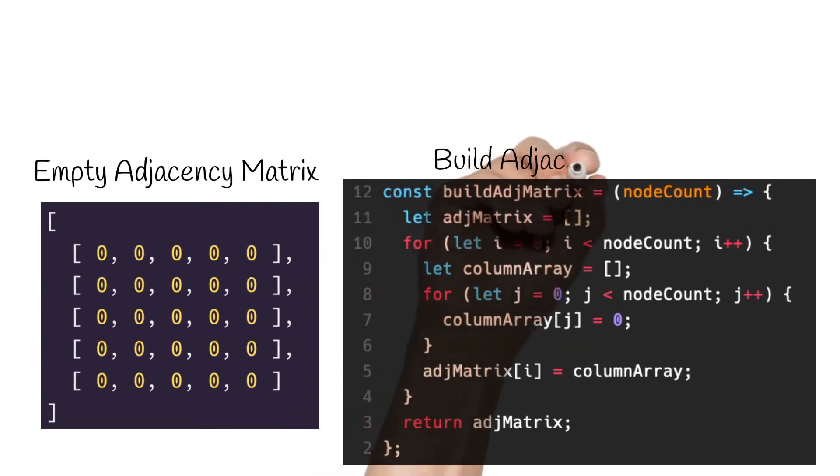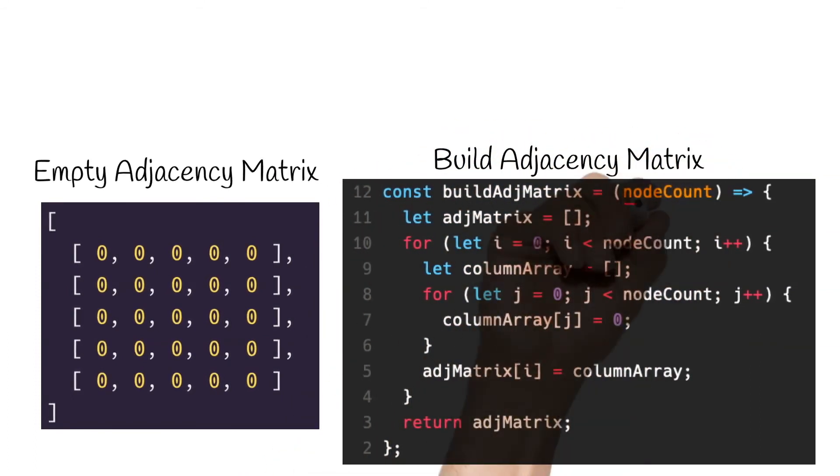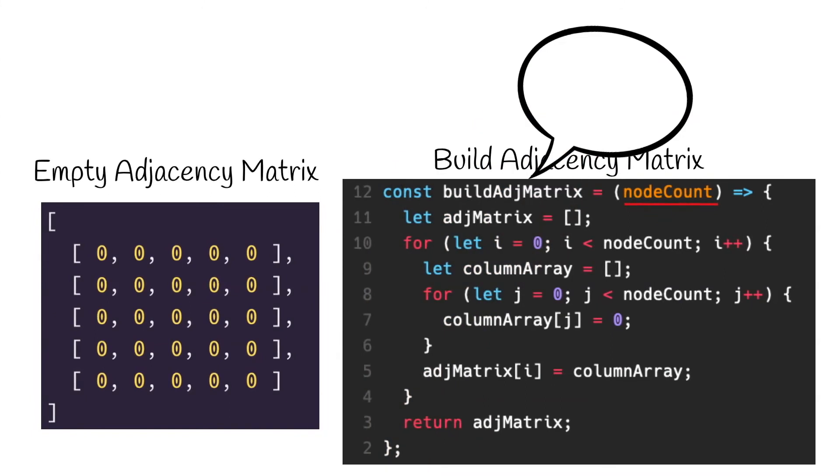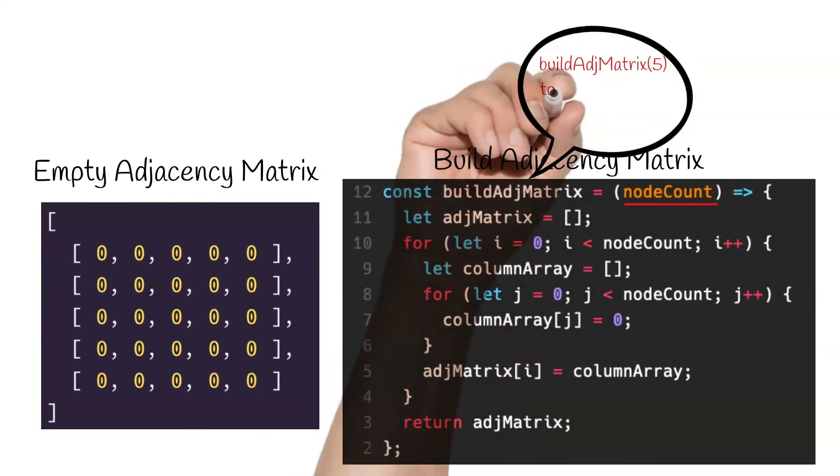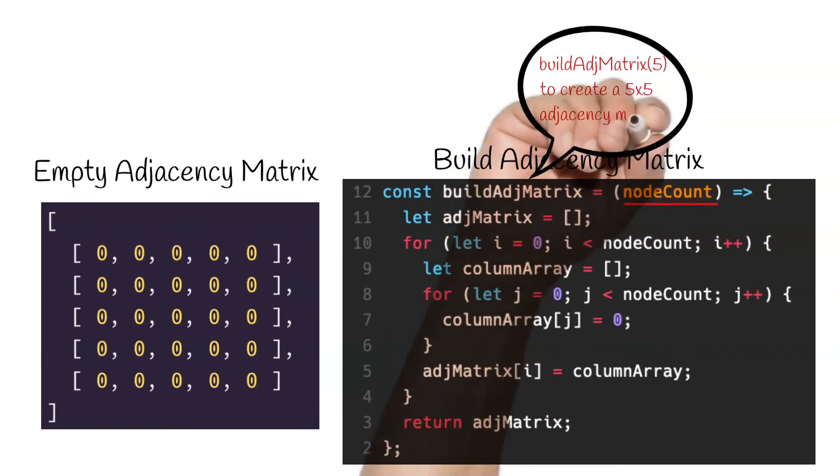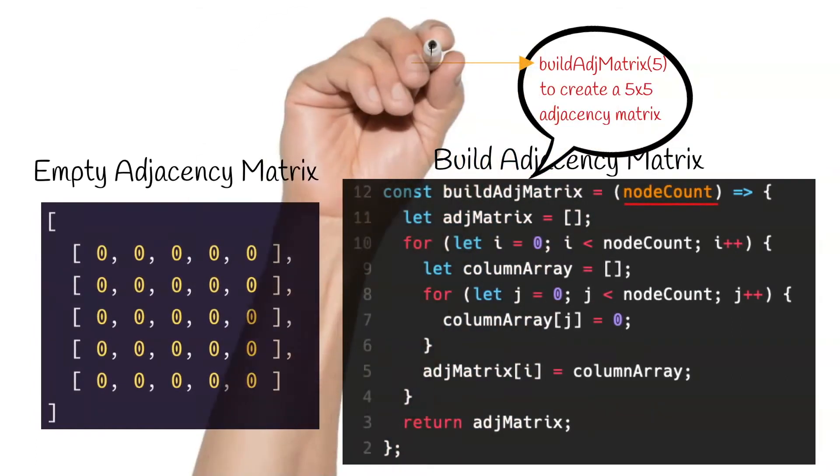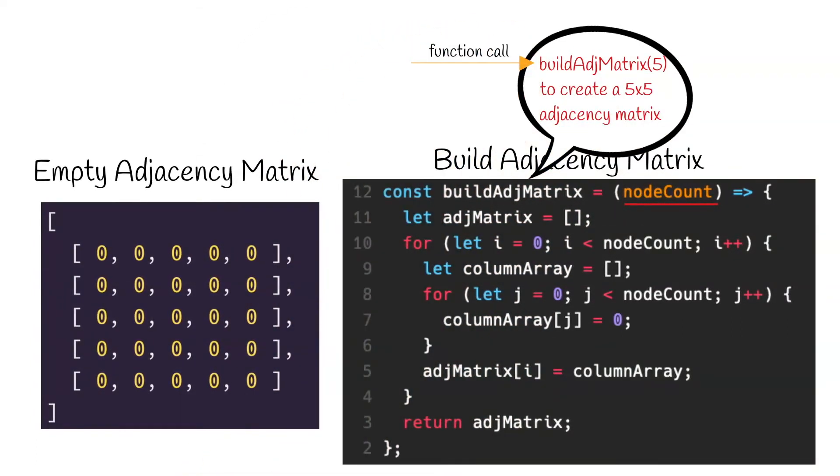Let's go through this code line by line. So the node count argument will determine the size of the matrix. So if we wanted to build a 5x5 matrix containing no edges, we would pass 5 as the node count argument to our build adjacent matrix function. This is because, as mentioned in the previous slide, to represent a graph in the form of an adjacency matrix, we will need to add a column for each node and a row for each node, resulting in an nxn matrix.